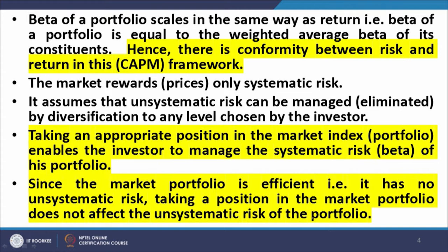Taking an appropriate position in the market index or market portfolio enables the investor to manage the systematic risk of a portfolio. The beta of a portfolio equals the weighted average beta of its constituents. So if one of the constituents is the market portfolio, the amount put into the market portfolio enables you to manage the systematic risk of the overall portfolio. Because the market portfolio is efficient, the unsystematic risk of the market portfolio is zero, and therefore addition of the market portfolio to your portfolio will not change the level of unsystematic risk.